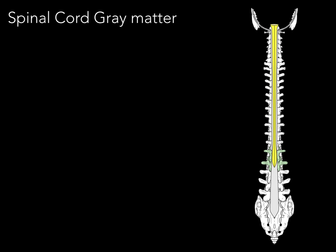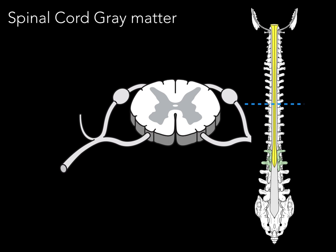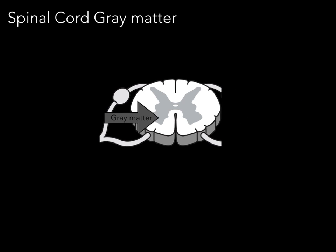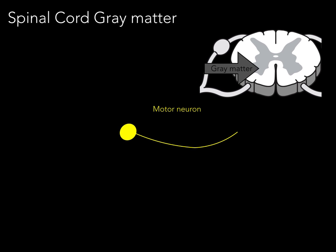Why is gray matter gray? To answer that question, we'll take a look at this spinal cord within the vertebral column. We're going to take a cross-section so we can focus on that spinal cord — some of it looks gray and some looks white. Why is it gray? Let's look at a motor neuron. The motor neuron has a cell body as the big circle, and then the long thin stem is the axon. Around the axon, we have myelin that forms a myelin sheath, which helps insulate and increase saltatory conduction. Myelin is white, and therefore when you have long bunches of axons surrounded by myelin, that part of the nervous tissue looks white — we call it white matter.